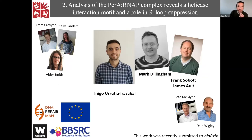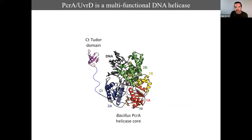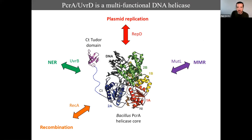The second topic deals with UvrD, or PcrA — the UvrD homolog in Bacillus subtilis, the organism this work was done in. This work was done by Inigo, also on the DNA Repairman training network, supervised by Mark and myself. PcrA or UvrD is a multifunctional superfamily 1 helicase involved in many different cellular processes including nucleotide excision repair and mismatch repair, targeted to those processes by interactions with specific partner proteins.